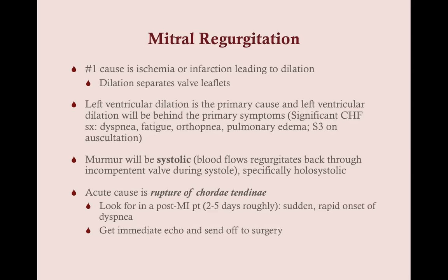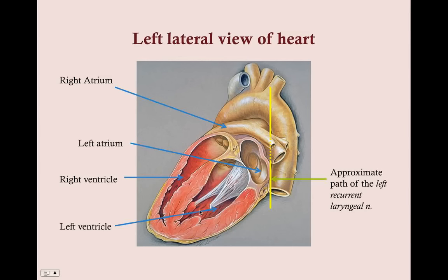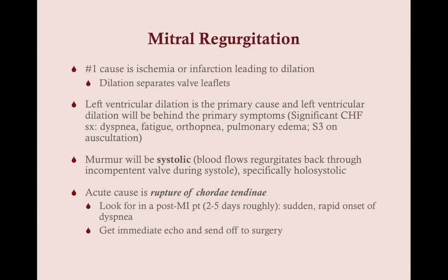Chronically, mitral regurgitation is caused by ischemia, coronary artery disease, and infarction — all the risk factors for systolic CHF. Acutely, rupture of the chordae tendineae can cause it. The chordae tendineae are the structures that hold the mitral valve in place; when ruptured, the mitral valve completely loses its ability to hold blood. This is an acute cause seen in patients post-MI — the infarction kills off muscle supporting the chordae tendineae and it suddenly ruptures.